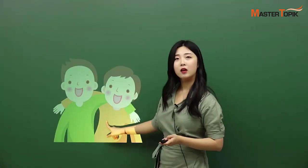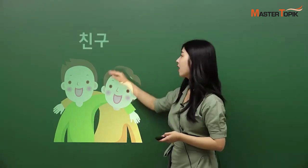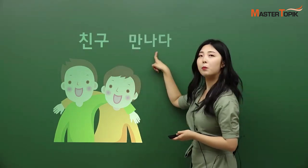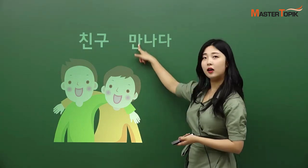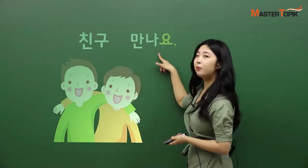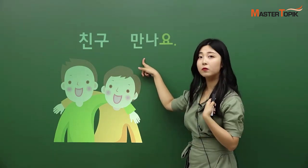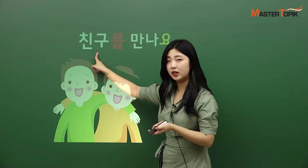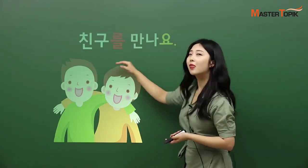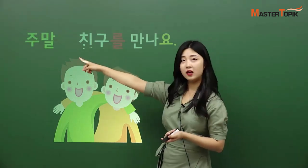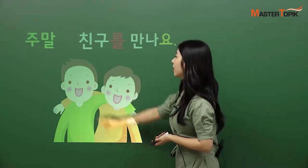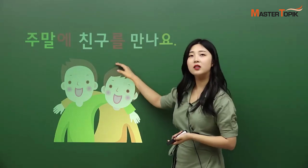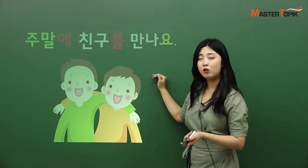They look like friends — 친구. 친구 만나다 — meet. 친구 만나요, meaning 'I meet my friends.' But here we need something because it is an object: 친구를 만나요. 언제? 주말. 주말에. 주말에 친구를 만나요 — 'I meet up my friends on weekends.'